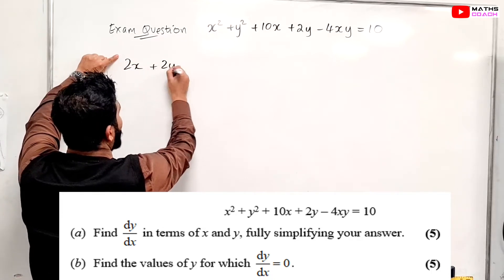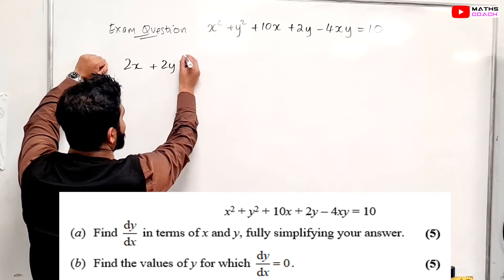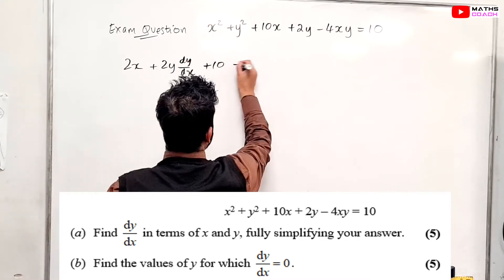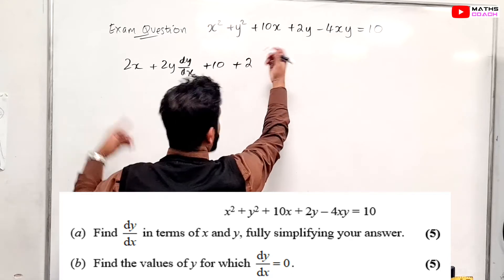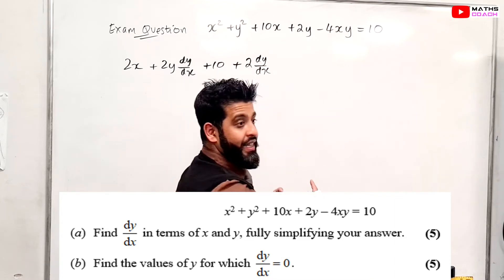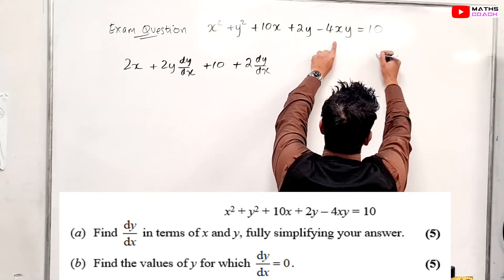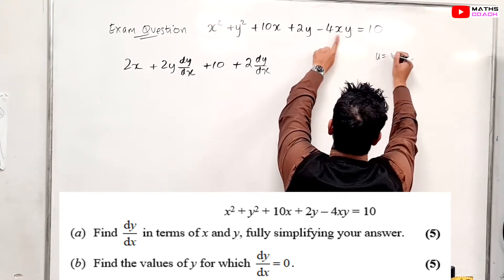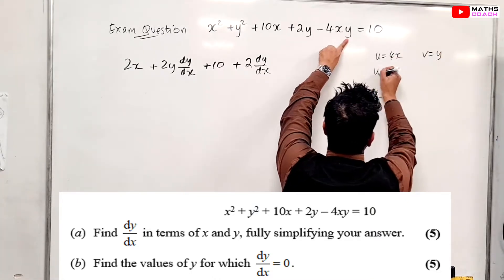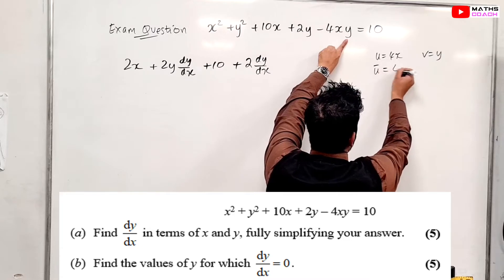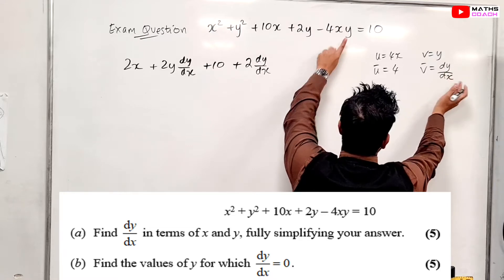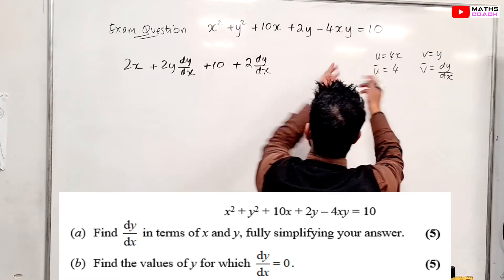So what do we get when we differentiate? We get 2x plus 2y·(dy/dx) plus 10 plus 2·(dy/dx). Now we've got the product rule applied here. We can say u equals 4x and v equals y, so the differentiation of u is 4 and the differentiation of v is dy/dx.